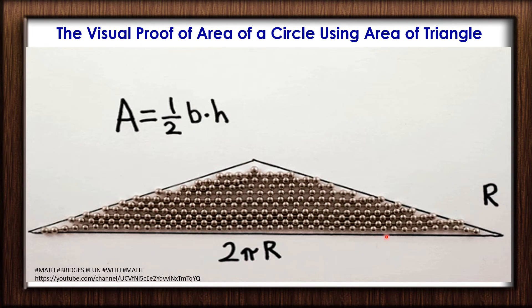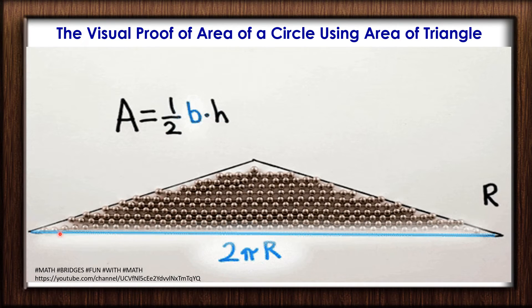The triangle formed by the beads of string - we all know the formula of triangle is half into base into height. Coming to the base here, the base of the triangle is the circumference of the circle. The last string of beads is the circumference of the circle, and the formula for that is 2πr. Therefore, base equals 2πr.